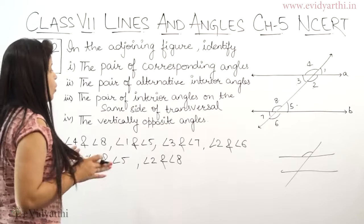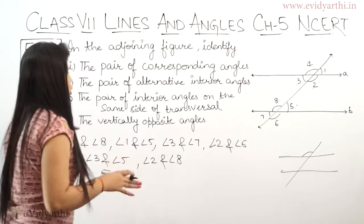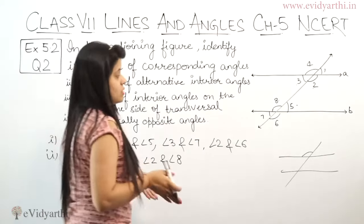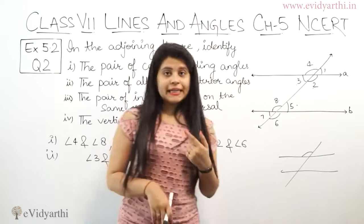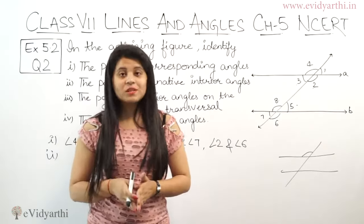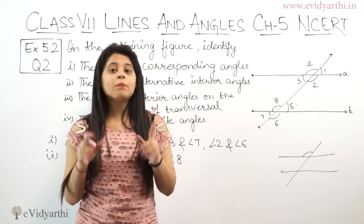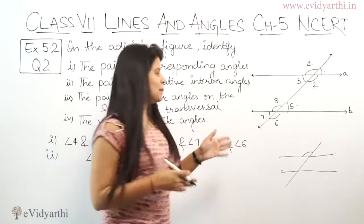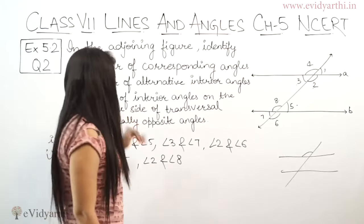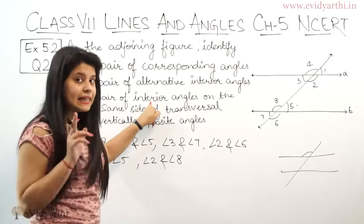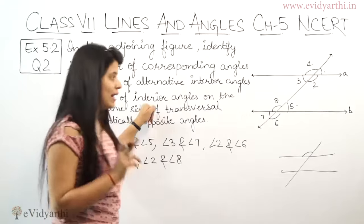Then third part is the pair of interior angles on the same side of transversal. First, which are the interior angles on the same side of transversal? Which angles are those? Supplementary means their sum is 180 degrees, but here we just need to identify which angles. Again here we have interior, interior means the inside angles.